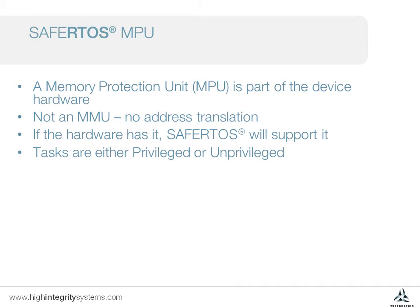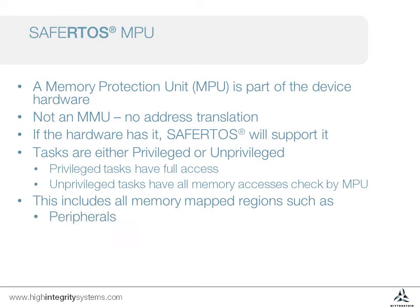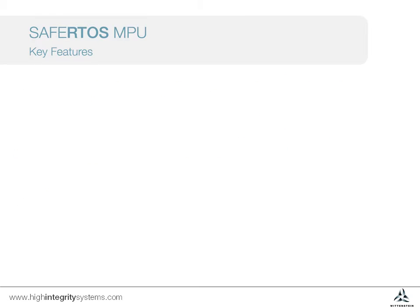Tasks operate in one of two modes. Privileged tasks have unrestricted access to all memory locations. Unprivileged tasks have all memory accesses checked transparently and automatically by the MPU. This includes all the memory mapped regions such as peripherals and flash.